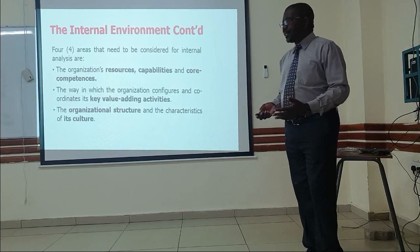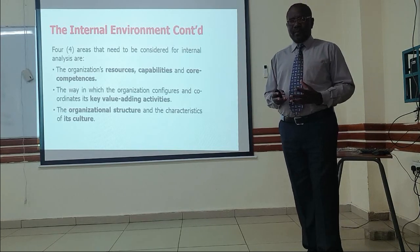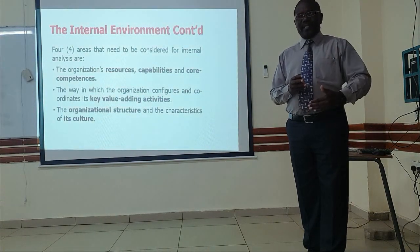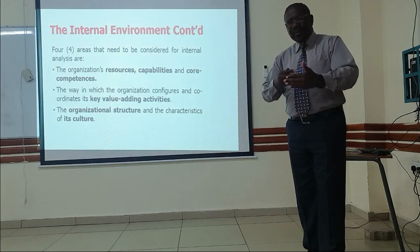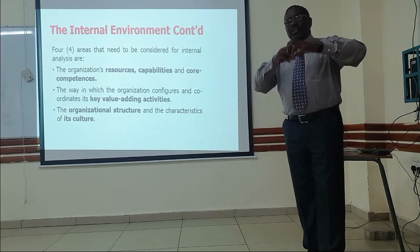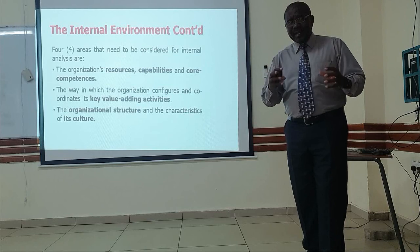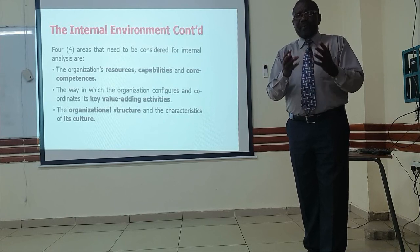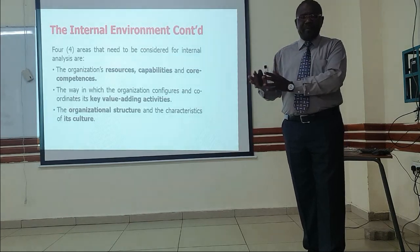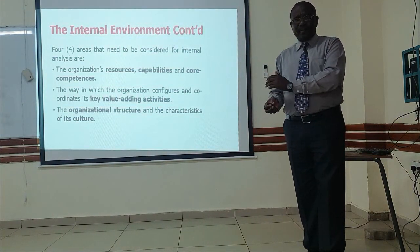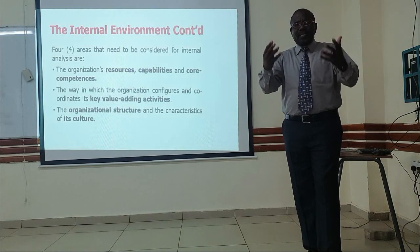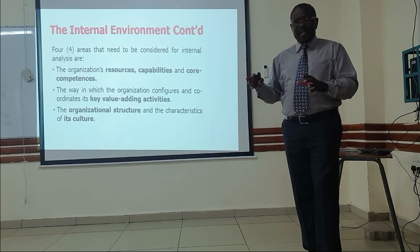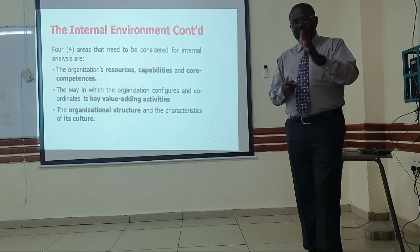The third area is the organizational structure and the characteristics of its culture. When you get to strategy implementation, even if you come up with a very good winning strategy, if the organizational structure is flawed — for example, there is a lot of bureaucracy and red tape so things cannot be done efficiently — that hinders successful implementation. You also need to consider culture: attitudes, belief systems, and value systems. If people have a negative attitude toward work, even a good strategy may fail in implementation.